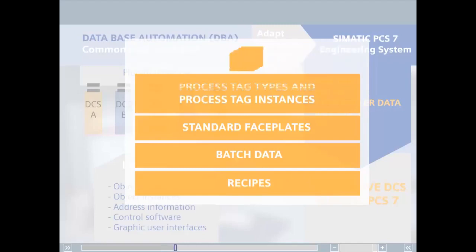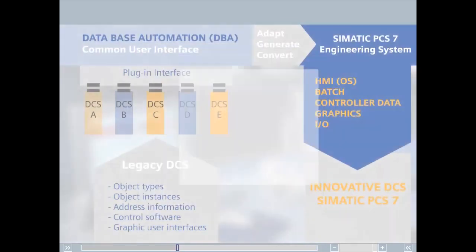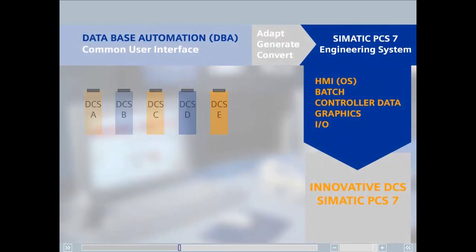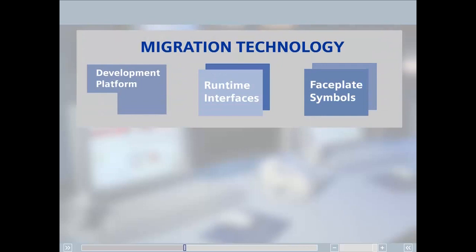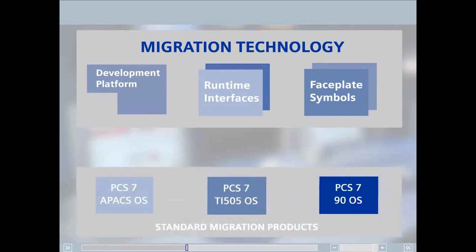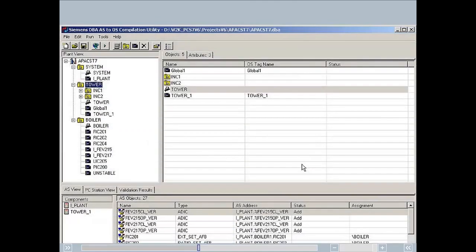Siemens also provides a graphics conversion service with which existing graphics of certain old systems can be converted for use in PCS7 at a fraction of the cost of a new configuration. The migration technology described here is incorporated in the migration products that are now available on the market as standard products for a variety of old systems. Care was taken to ensure that these products fully support the typical use cases with which you are familiar. To complete this section, let's have a brief look at the user interface of DBA. In the next section, the practical part of our presentation, you will see its strengths in greater detail.